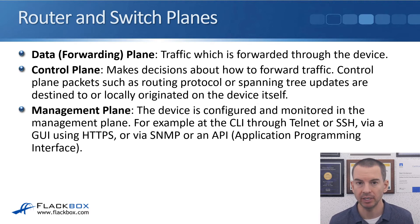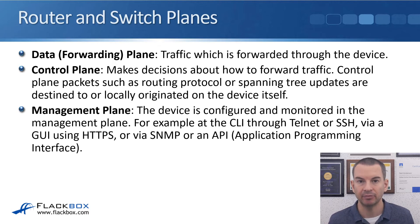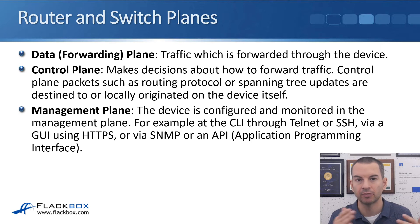The data plane, which can also be known as the forwarding plane, is where traffic is forwarded through the device. For example, if you're sitting in the office and you open up a web page on the internet and the packets are going through the router, those packets are passing through the data plane. Any normal production traffic which the router is forwarding through its interfaces is going through the data plane.